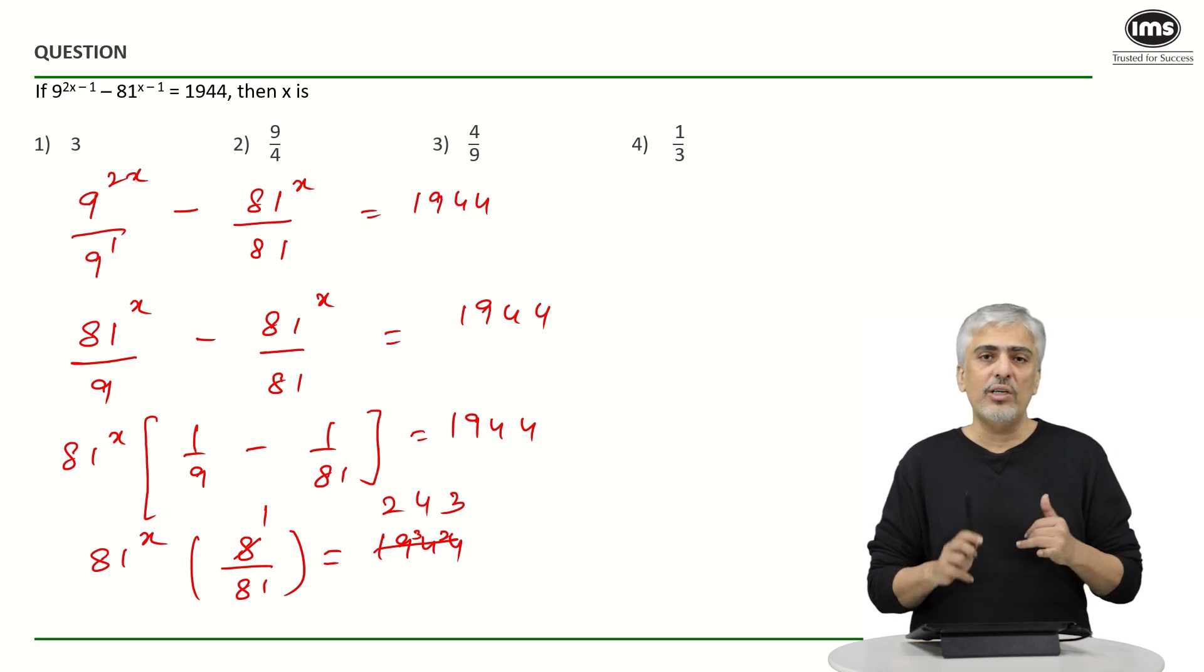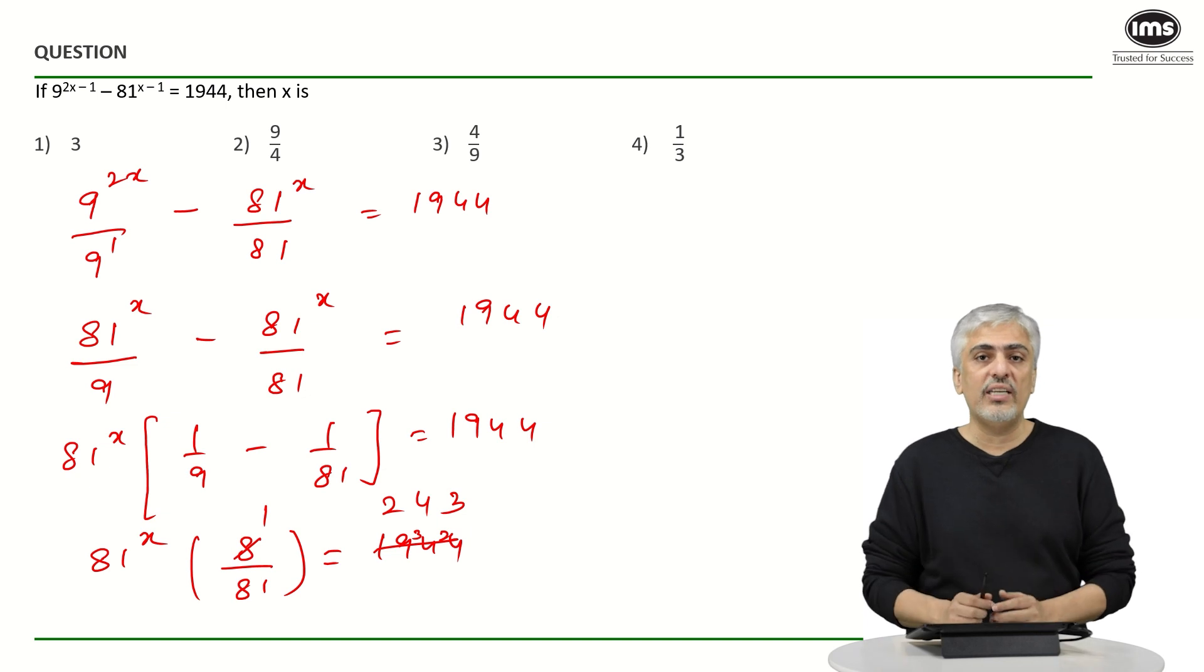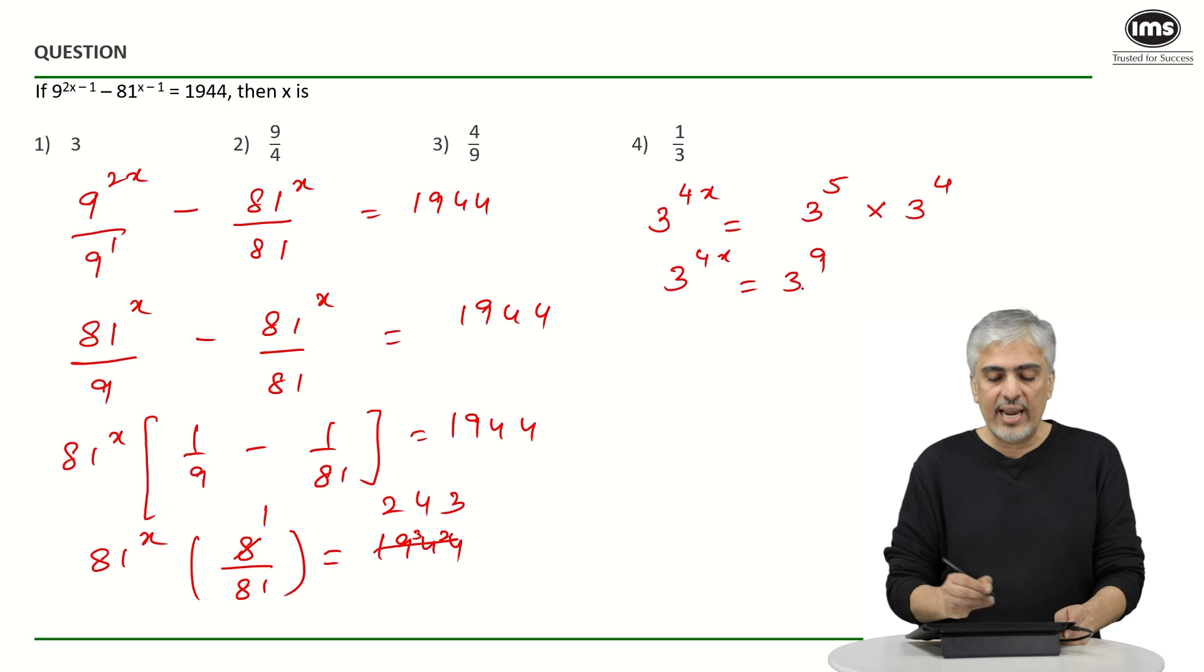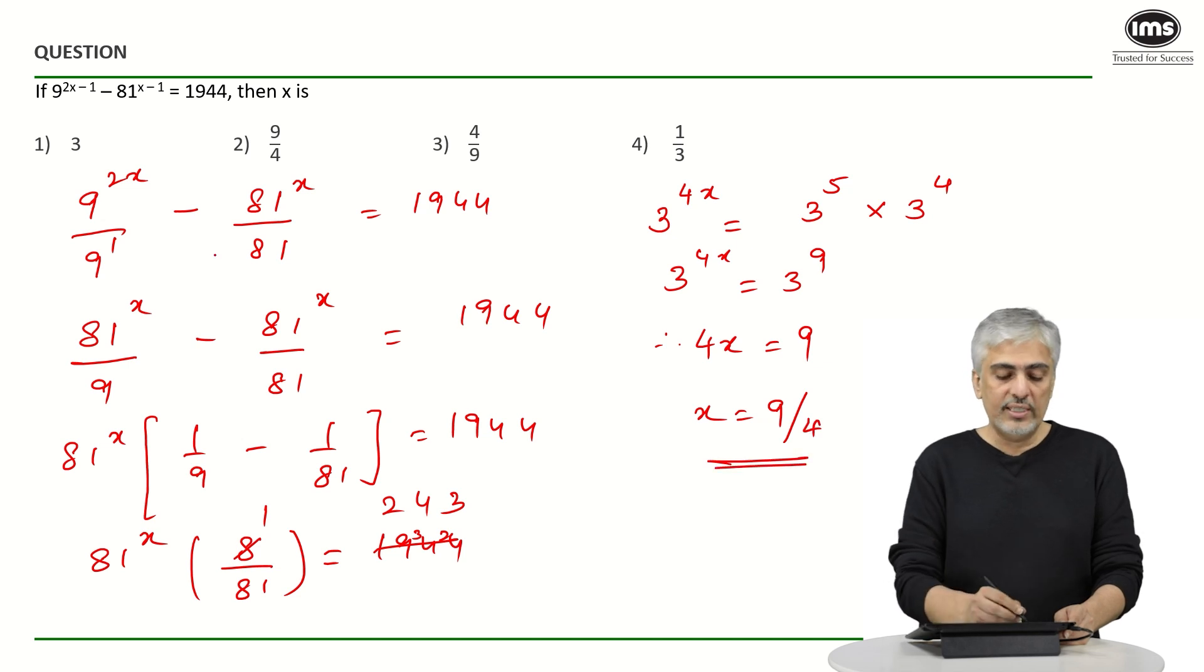Now you should know that 243 is also power of 3 and 81 is also power of 3. So I can write all of them in powers of 3. I can write it as 3 raised to 4x equals 243 is 3 raised to 5 and the 81 went on top which became 3 raised to 4. So 3 raised to 4x equals 3 raised to 9 using indices, and therefore 4x is 9, x is 9 by 4 which is the second option.